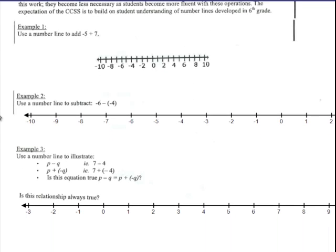Use a number line to add negative 5 and 7. So you start at 0, you go to negative 5, and then adding 7 would go in the positive direction, which means you would go to the right. So that would get you to positive 2. Negative 5 and 7 equals positive 2.